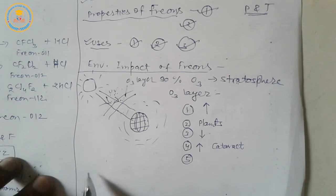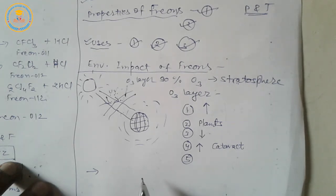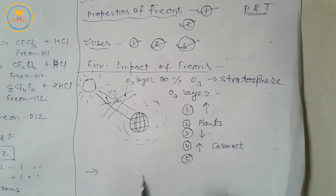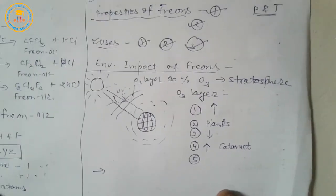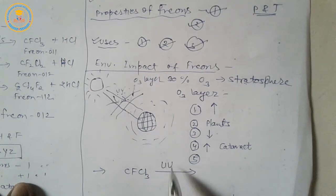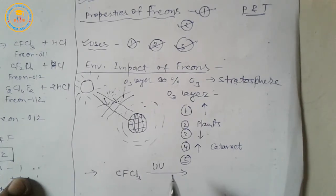Freons, because of their extreme chemical stability, reach the stratosphere without getting destructed in troposphere, where they react with increased UV radiation caused due to depletion of ozone and release the chlorine free radical from its parent compound. Freon compound in presence of ultraviolet radiations decomposes into chlorine free radical.